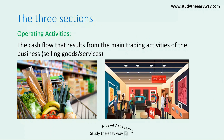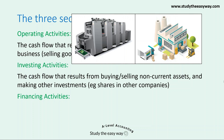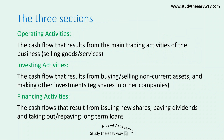Operating Activities refers to the cash flow that results from the main trading activities of the business, typically making or buying in goods and then selling goods or services to customers. Investing Activities refers to the cash flow that results from buying or selling non-current assets and making other investments, such as buying shares in other companies. Financing Activities refers to the cash flows that result from issuing new shares, paying dividends, and taking out or repaying long-term loans. This overview will help you remember what items to include in each section when preparing the Statement of Cash Flows.